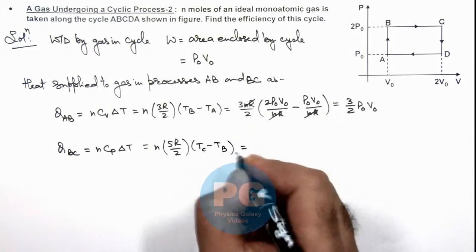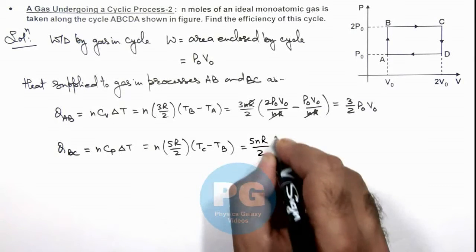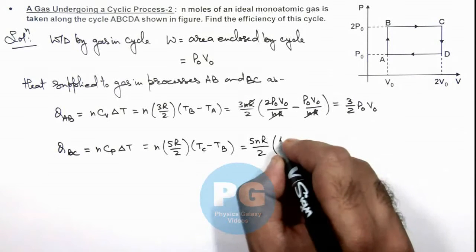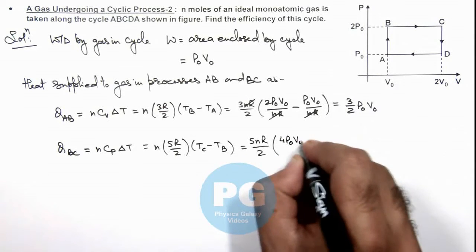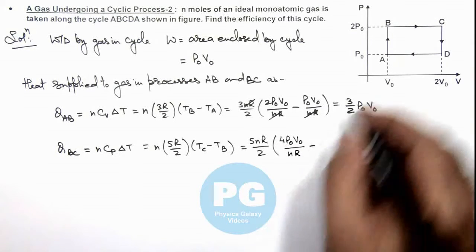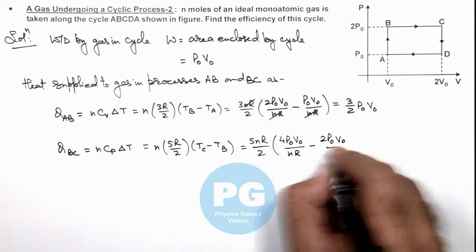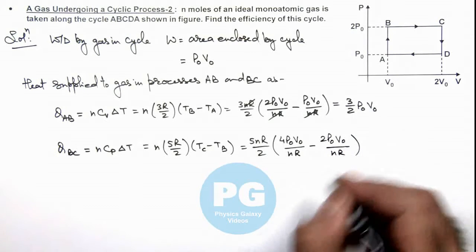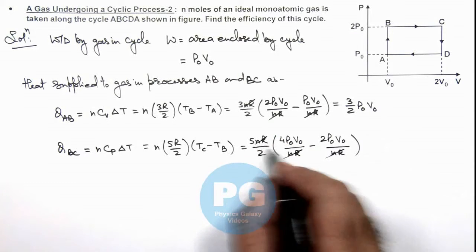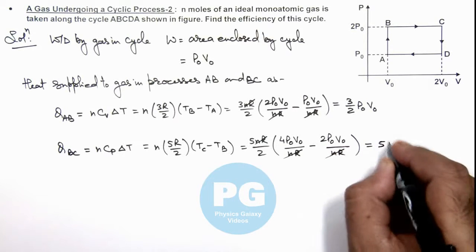So on further simplifying this, this gives 5nR/2 multiplied by Tꜿ we can write 2P₀ multiplied by 2V₀ is 4P₀V₀/nR is the temperature at C, minus temperature at B we already taken as 2P₀V₀/nR. And here also nR gets cancelled out, and on further simplifying the value of heat supplied we are getting is 5P₀V₀.